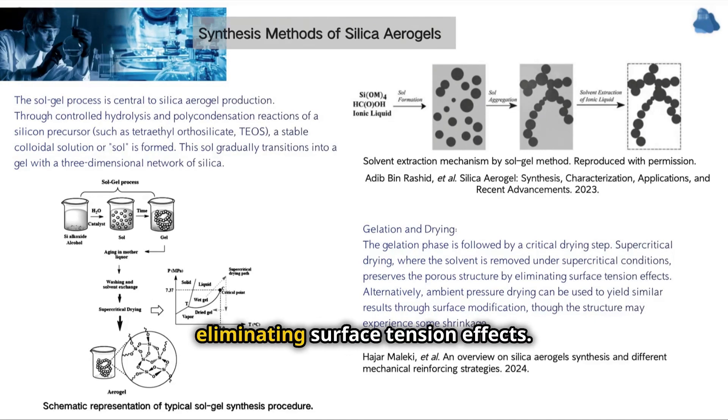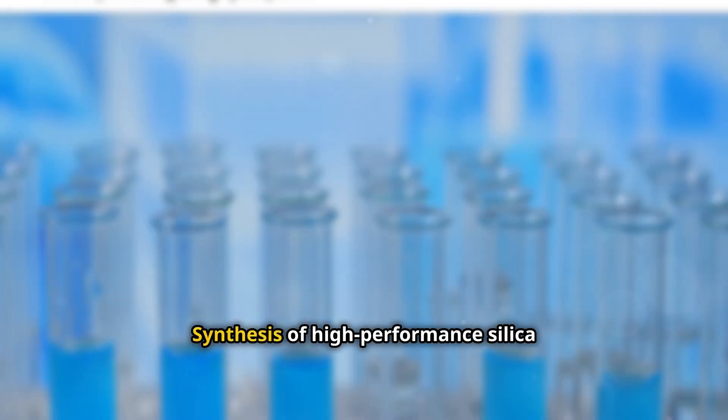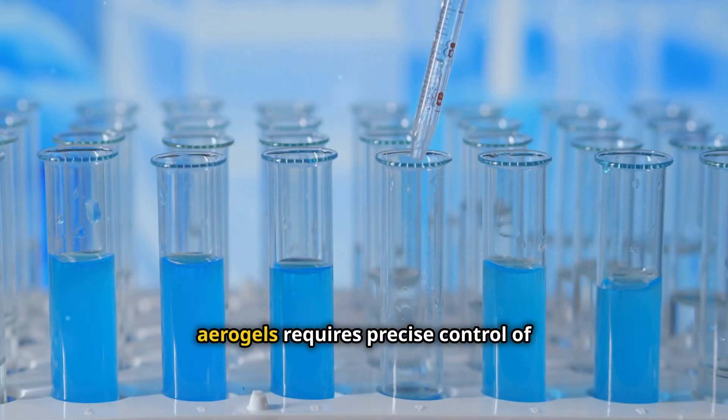Supercritical drying involves removing the solvent under supercritical conditions to preserve the porous structure by eliminating surface tension effects. Alternatively, atmospheric pressure drying can be used to obtain similar results through surface modification, but some shrinkage of the structure may occur.